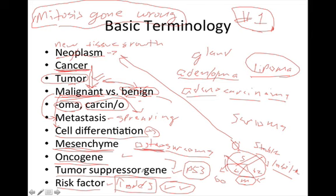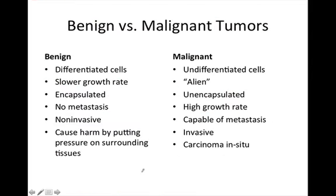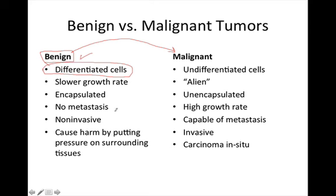Now let's talk about the differences between benign and malignant tumors. Benign tumors are typically the less dangerous diagnosis, but keep in mind that many benign tumors, if left untreated, have the capability of becoming malignant. So even though a benign diagnosis is relatively good news, it can become worse if left alone too long. Benign tumors contain differentiated cells that look a lot like the tissue the tumor is growing within.